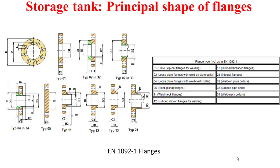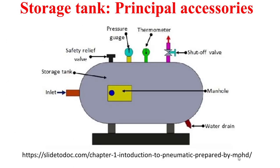For the flanges, there are some principal types, as you can see in this slide. These types are extracted from the European standard EN 1092-1. For example, type 01 is called plate flanges for welding, and type 04 and 34 are called loose plate flanges with weld neck collar.